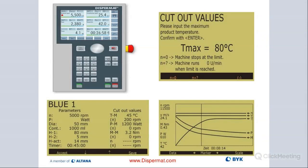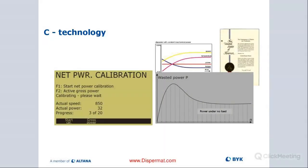You can also see the entire dispersion process in real time with trend lines for each of these variables, which allows you to monitor the entire dispersion process in real time. The net power calibration — running the machine without any product for a couple seconds — factors out the load it's using to operate itself without product, so all values you see when running with product are strictly related to your material.